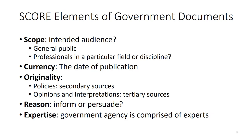Currency is based on the date of publication — you can easily assess that, assuming that your website has a date of the material. For originality, rarely are government documents primary sources. Usually, they are secondary or tertiary sources, although most government officials would claim that they are based on research. As for expertise, the government agency is comprised of experts, and as a government agency is assessed two points for expertise.